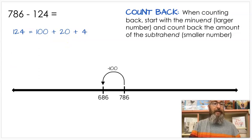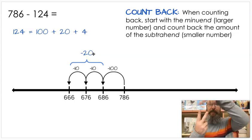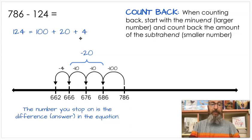This is why knowing expanded notation is so important. So if I jump 100 first, because we did 100 yesterday, we know that makes 686. Now I'm going to break 20 into two tens. You might be able to do it in a 20. That's fine. But if I break it into two tens, that makes 676, 666. That's that jumping backwards by tens we practiced in lesson one. You might have been able to do that as a whole 20. Now I'm going to subtract my four, which gets me to 662. Now when you count back, the number you stop on is the difference, which is the answer in the equation, which means 786 minus 124 equals 662.